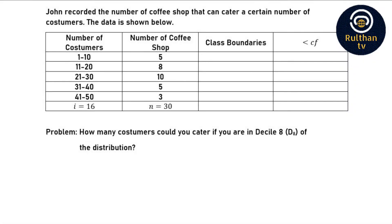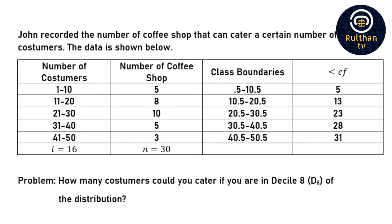The first step is we have to complete the table. As I have already shown you, the table is empty and we need to complete certain columns in order to solve for the value of decile 8. We have the cumulative frequency and the class boundaries to fill. I have already posted a separate video on how to do this part, so what I am going to show you now is the finished product — the completed table with class boundaries and cumulative frequencies.